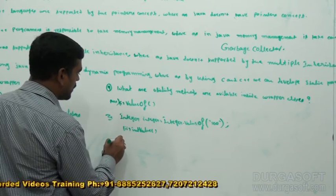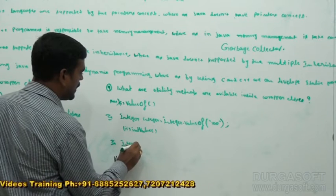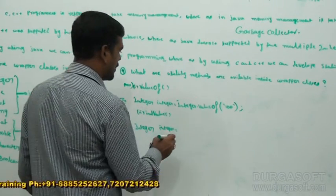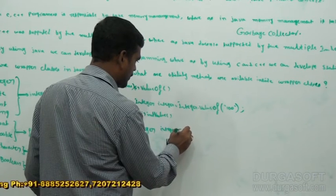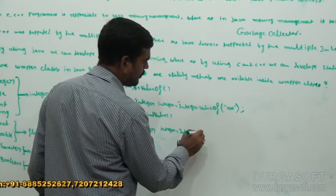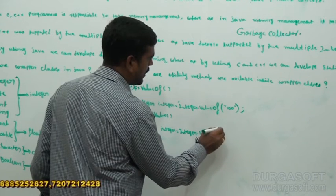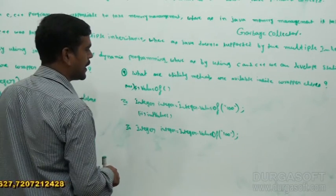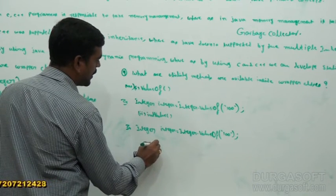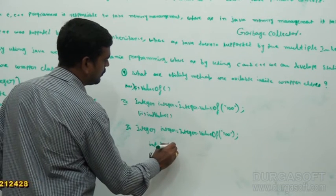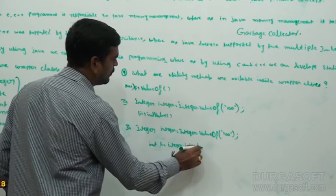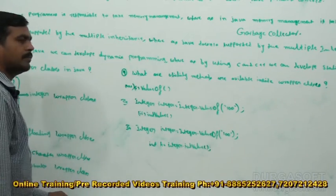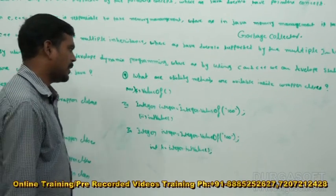How do you get that int value? For example: `Integer integer = Integer.valueOf(100)`. If we want to get that value, `int k = Integer.intValue()`. Like this we can get the int value.